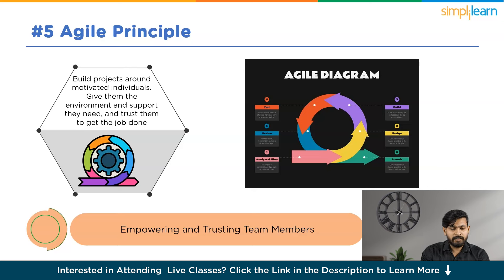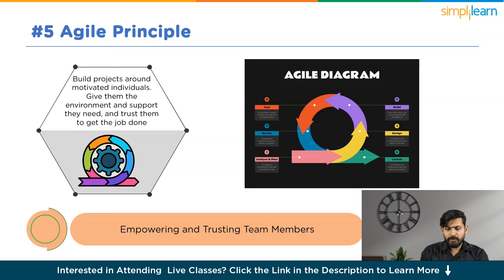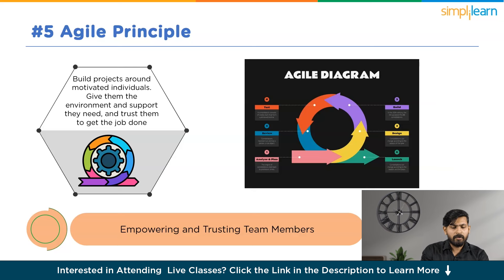Once work is underway, micromanagement has no place in Agile. The product team's responsibility does not extend to dictating how something is built. While they communicate the what and the why, it is the delivery team's responsibility to determine the most suitable approach. During sprints, product management refrains from micromanaging outcomes and instead makes themselves available to answer questions and provide support as needed. This principle clearly states: empower and trust your team members.